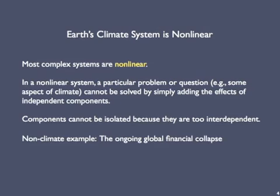Most complex systems are non-linear. In a non-linear system, a particular problem or question — like some aspect of climate — can't be solved by simply adding the effects of independent components, because the components aren't independent. They can't be isolated because they're so interdependent with other components. This is certainly the case for Earth's climate system, and also for many other complex systems in modern life. An example is the slow-motion global financial collapse underway since 2012 — you can't understand it fully by examining the finances of a single country or bank, because so many countries and banks have financial relationships with one another.